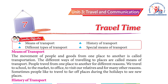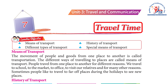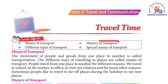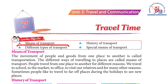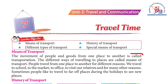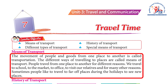Unit 3: Travel and Communication. Chapter 7: Travel Time. Learning objectives include means of transport, history of transport, and different types of transport, as well as special means of transport. The movement of people and goods from one place to another is called transportation.